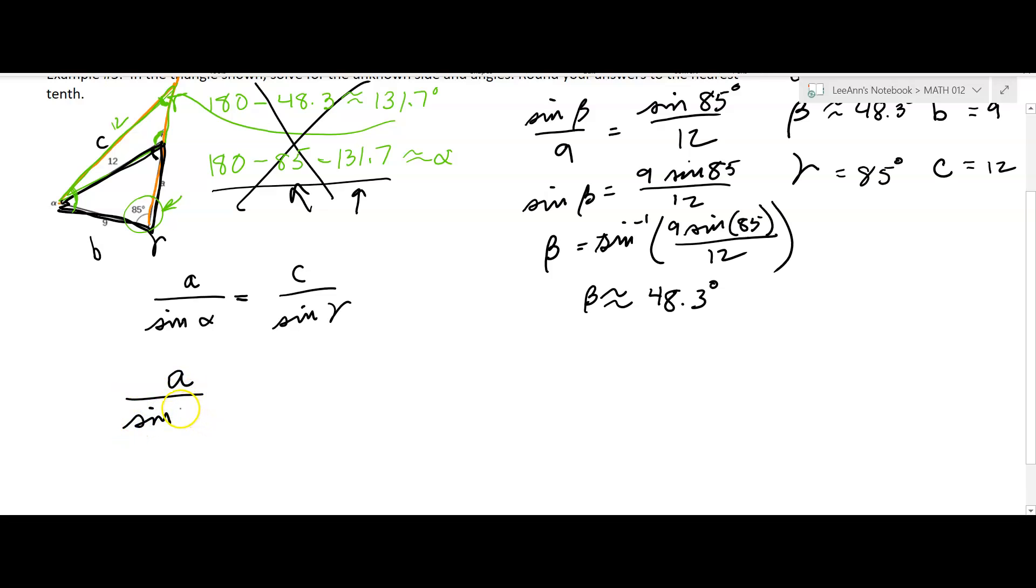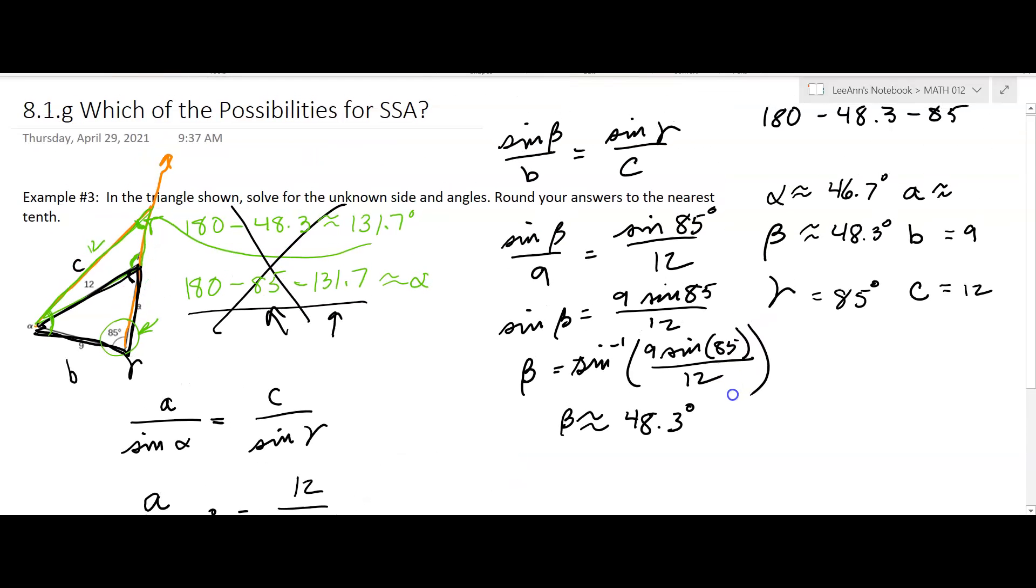And then we can plug in those values. And alpha was, oh great, I lost alpha. It was 46.7, I think. Yeah. And that's equaling C, which was 12, over sine 85. So A is going to equal 12 sine 46.7 divided by sine 85. I'm getting A to be approximately 8.8. So I'll put that in my chart here.